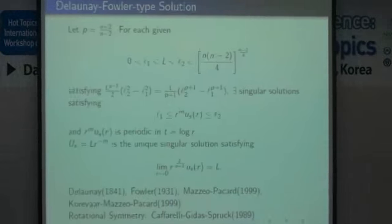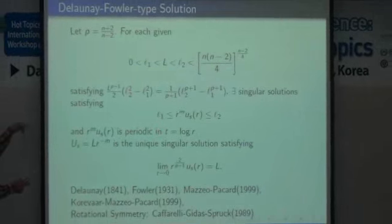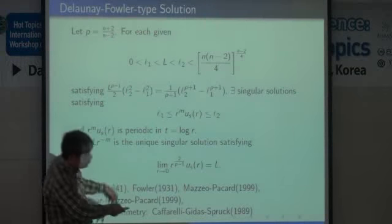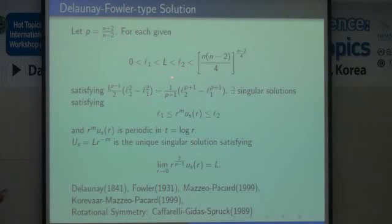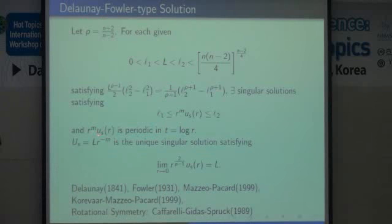This is the unique singular solution, and this is the critical case. Two viewpoints meet at this exponent. In the critical case, there are other types of singular solutions. We call these Emden-Fowler type solutions. This means that R^m × U, as U is periodic again in T. This kind of solution has been studied by many people.